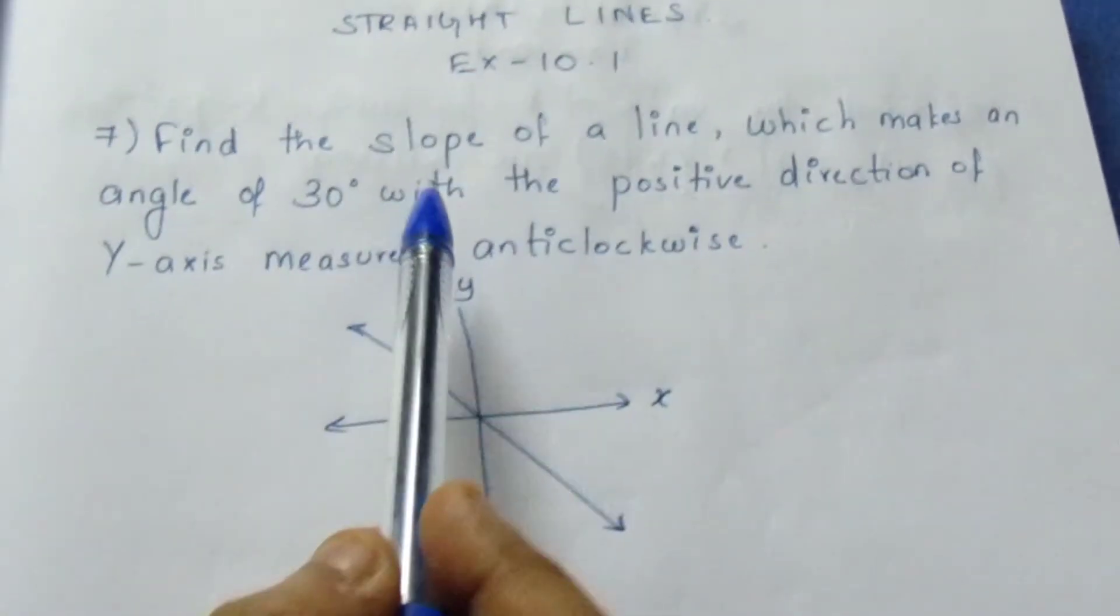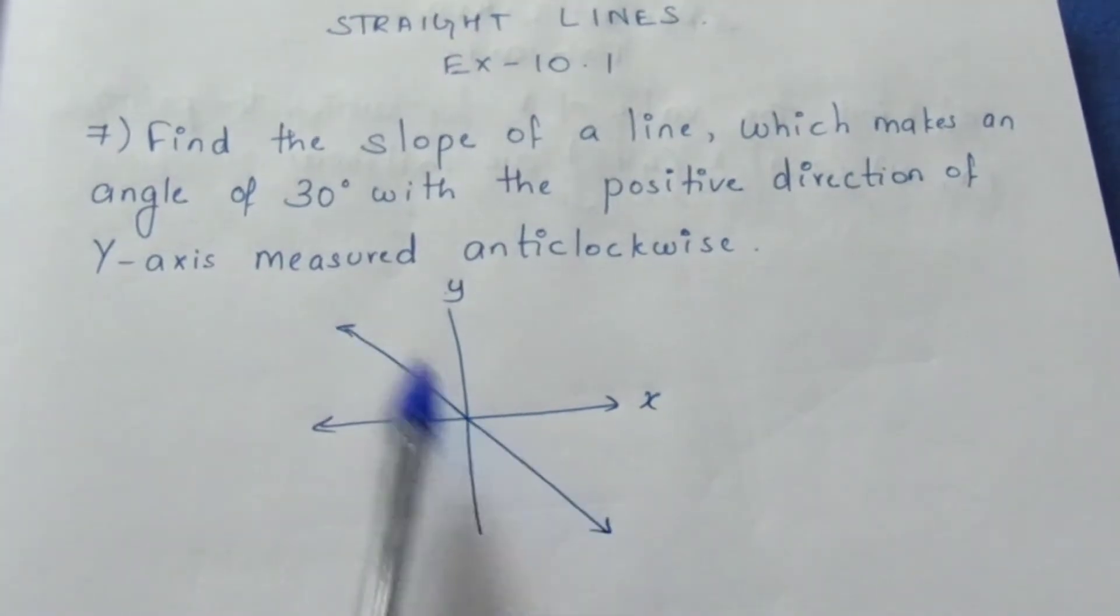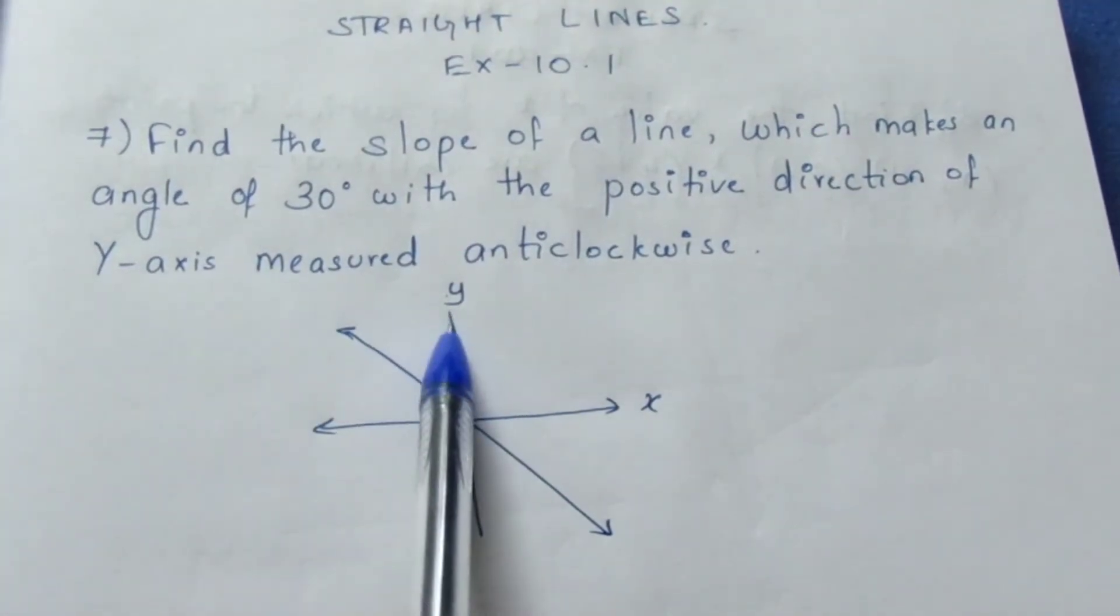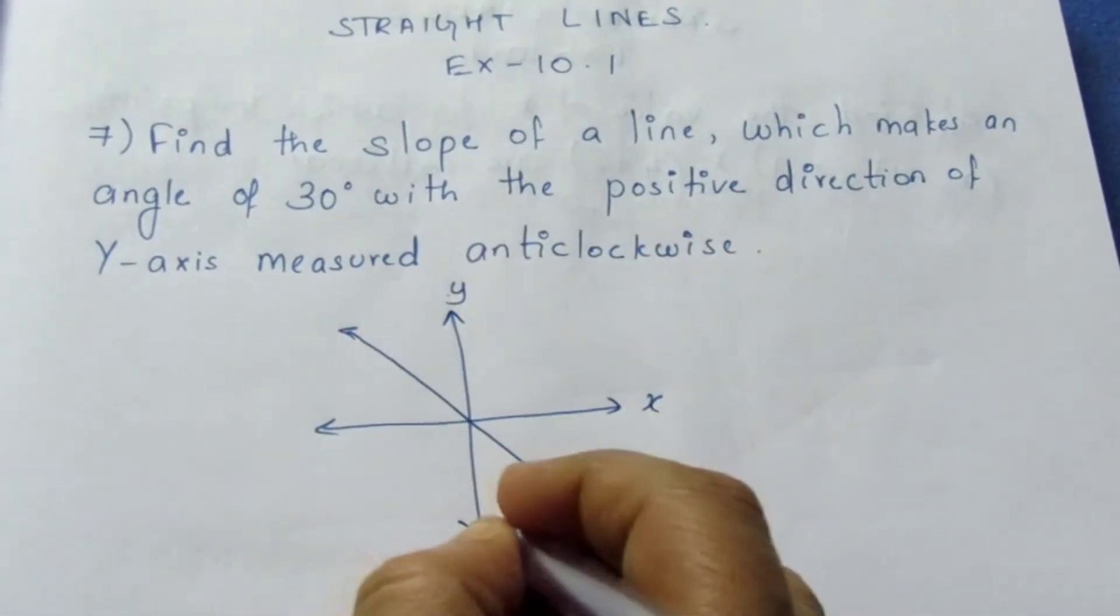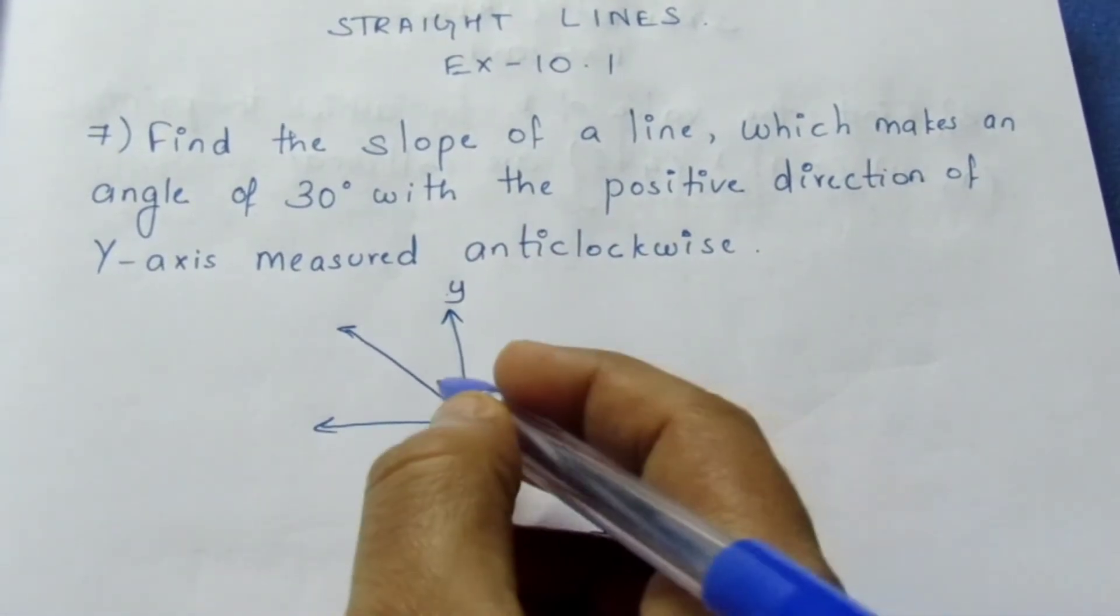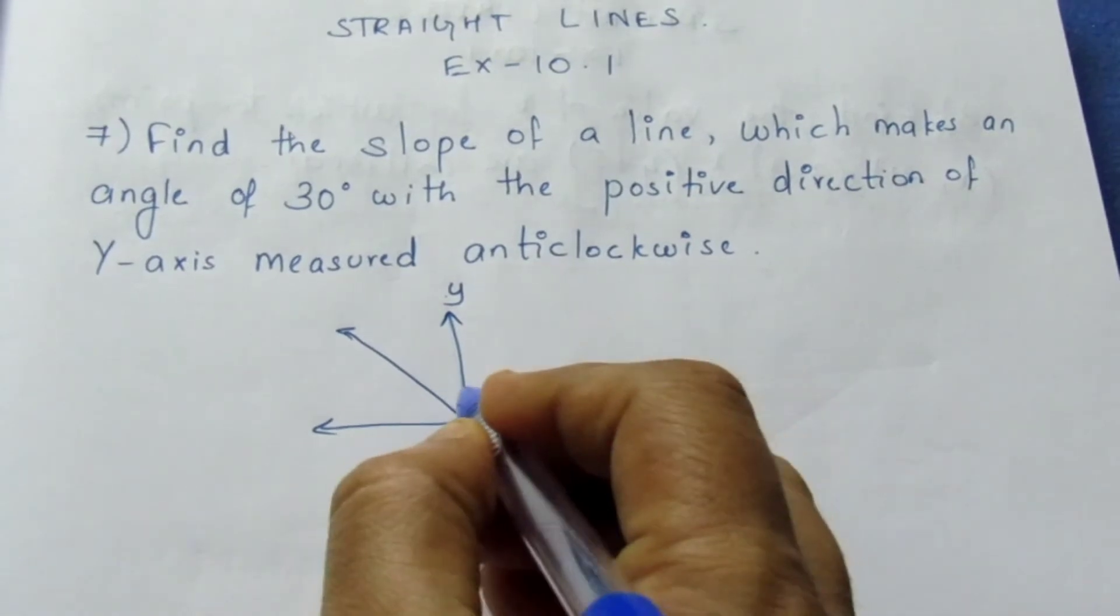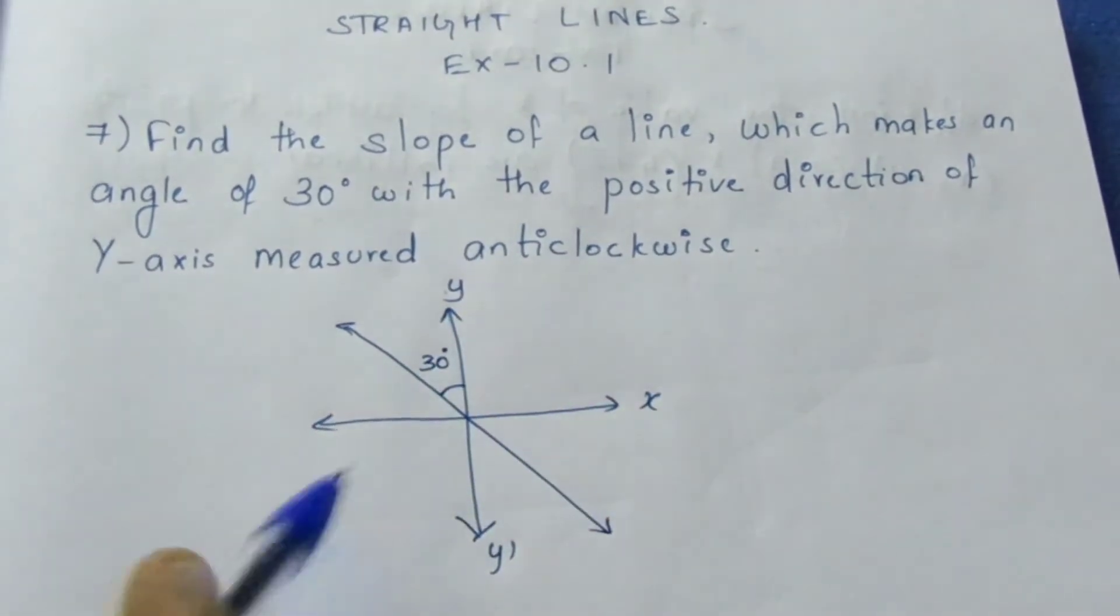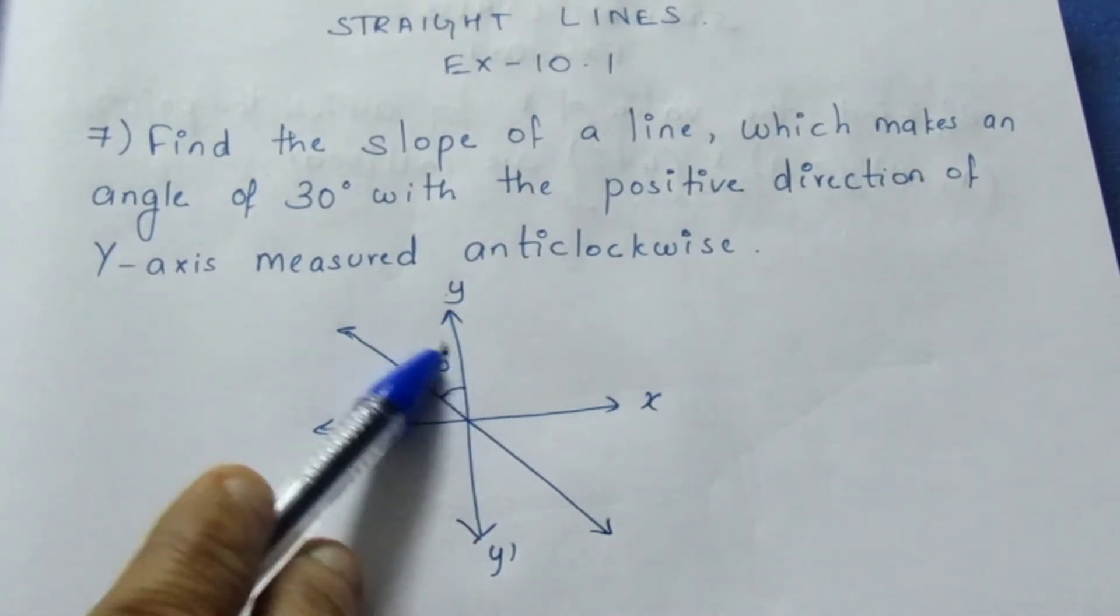Here, find the slope of the line which makes an angle 30 degree with the positive direction of y-axis. We know that this is the positive direction of y-axis and this will be the negative direction. Here it makes an angle 30 degree with the positive direction of y-axis.